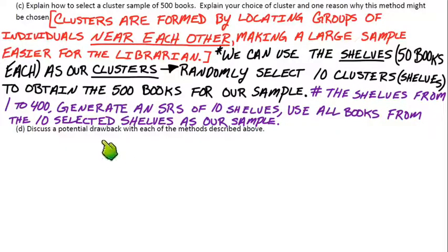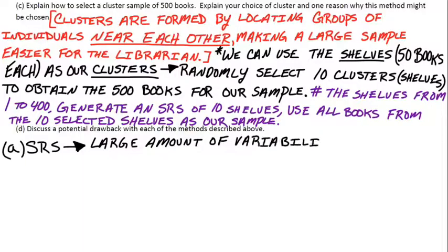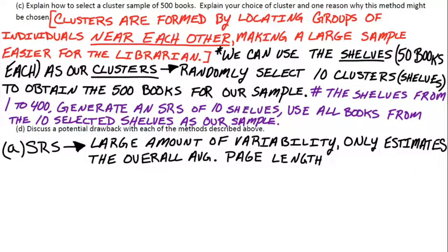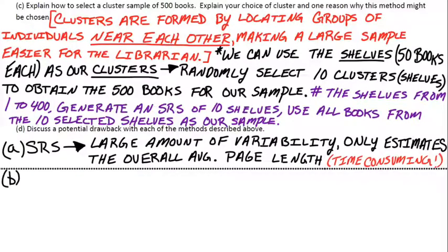What are potential drawbacks of each method? For the simple random sample, there could be a ton of variability — by random chance you could get all huge books or all short books. It only estimates the overall average page length without regard for specific types. Also, it would be very time-consuming to label all 20,000 books and then go pick out 500 random individuals from the shelves.